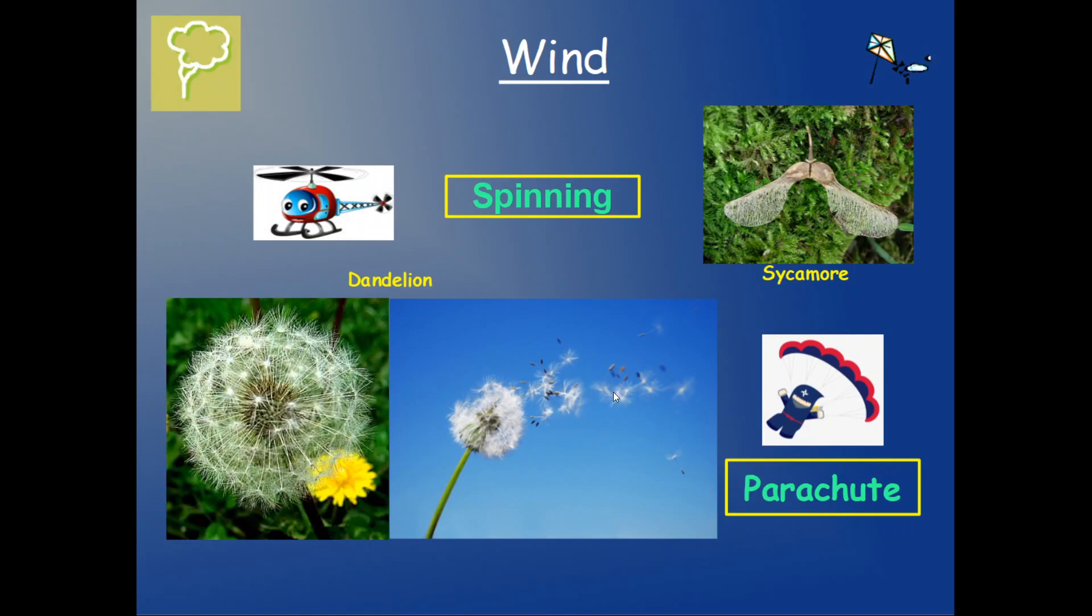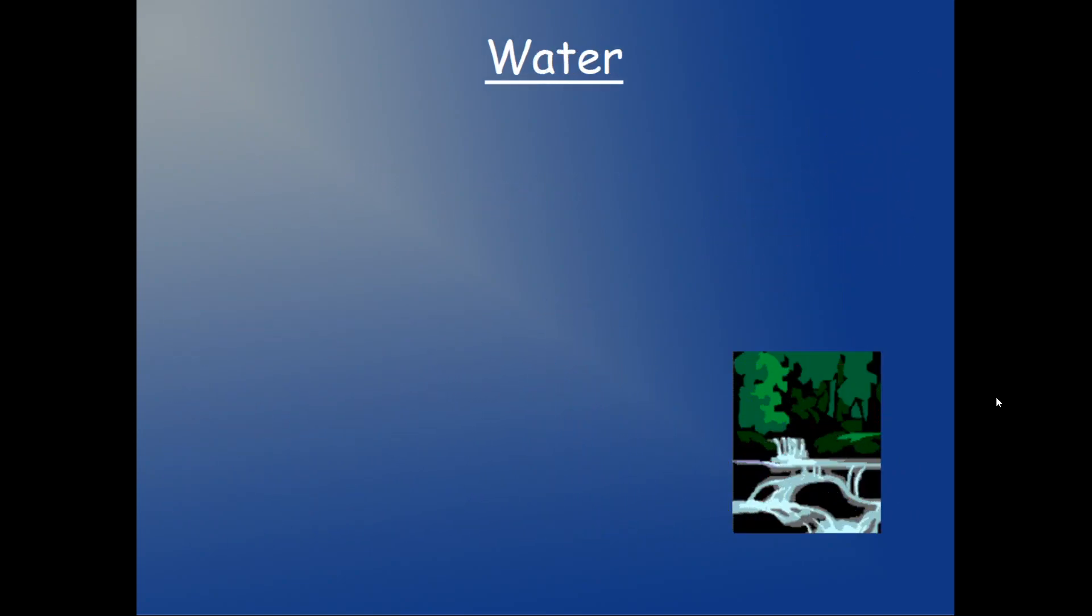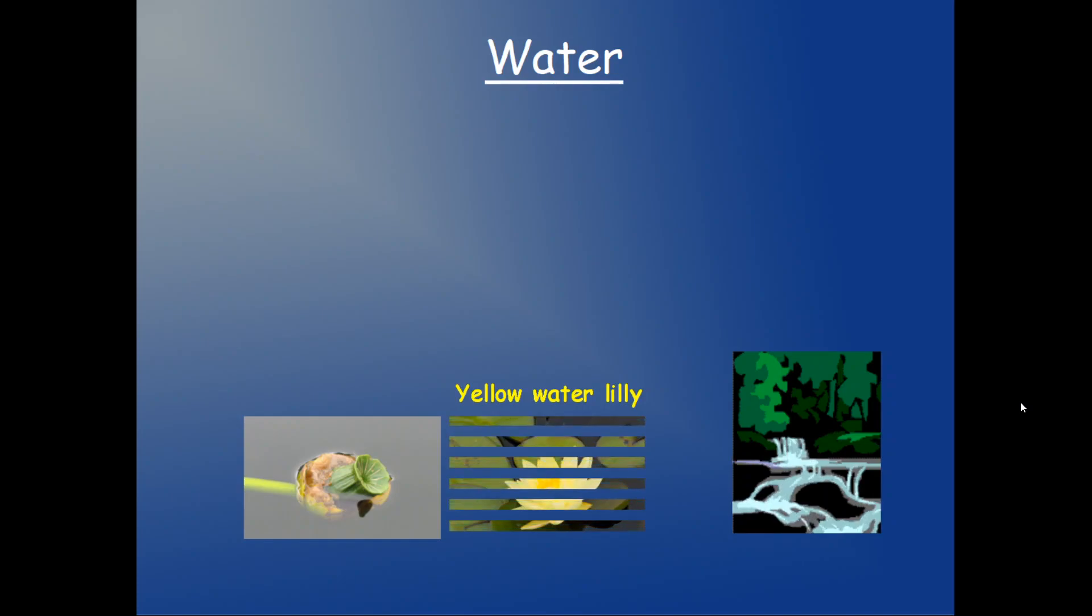Another option, instead of the wind we can use water. When I mean water, I mean streams or currents of water. For example, those plants who grow close to water. An example: the yellow water lily. This is the seed. The seed is going to travel, to swim, and when it finds the right place, the right location, it's going to stay there, grow roots, and grow. But now it's going to grow far away from its mommy plant.